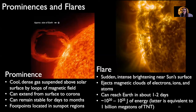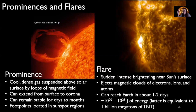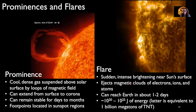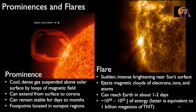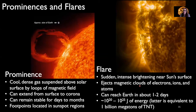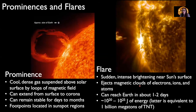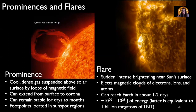Next we have a flare. A flare is the event we're going to see right here — there was a bright flash of light whenever that loop of magnetism popped off the sun's surface. A flare is a sudden, intense brightening near the sun's surface. With a flare event, you have ejected magnetic clouds of electrons, ions, and atoms. These flare events send out a cloud of magnetism and charged particles, and they can reach the Earth in about one to two days — they're not traveling at the speed of light.